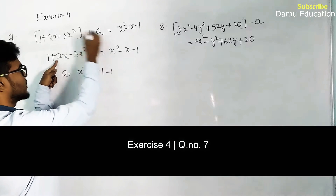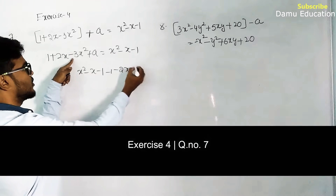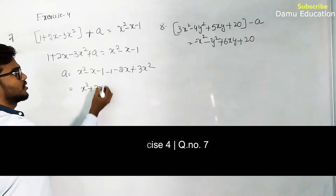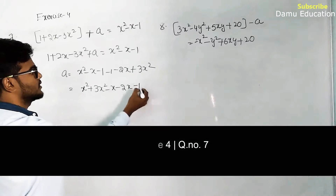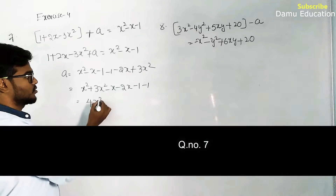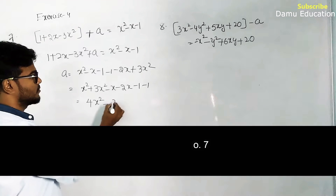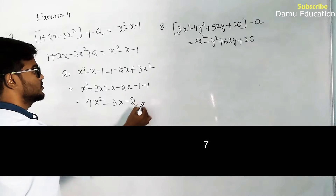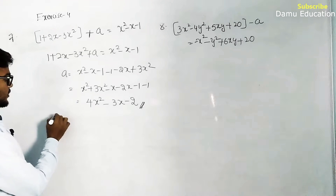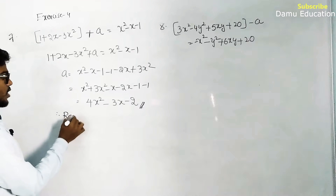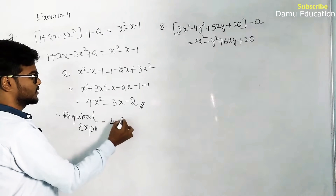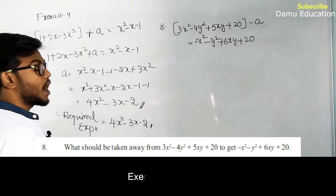So we have x² + 3x² - x - 2x - 1 - 1. Then x² + 3x² = 4x², -x - 2x = -3x, and -1 - 1 = -2. Therefore the required expression is 4x² - 3x - 2, which needs to be added to get x² - x - 1.